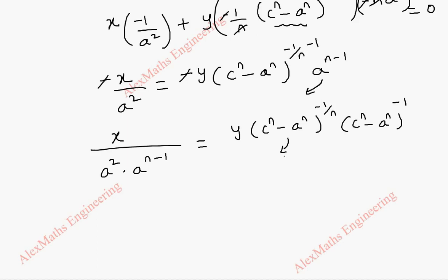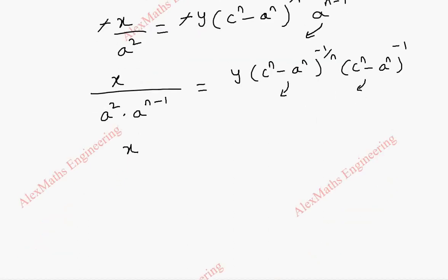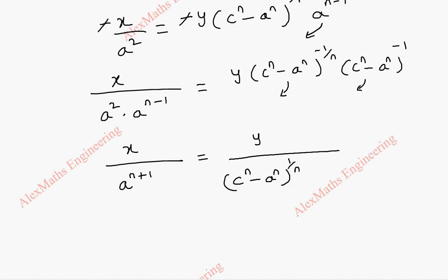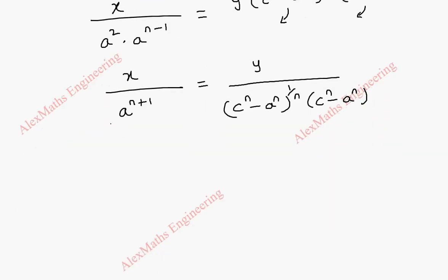Taking those terms to the denominator, and combining the power, it is a^(n+1). So this is x/a^(n+1) = y / [(c^n - a^n)^(1/n)·(c^n - a^n)]. I am going to rewrite a^(n+1) as a^n·a, because we have to use the ratio property. So this is (x/a) divided by a^n, because this will become a product of a^n·a, and finally it equals a^(n+1).